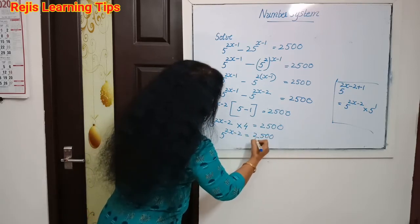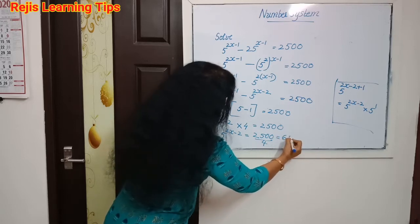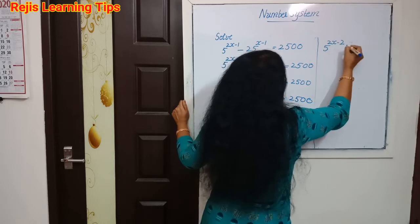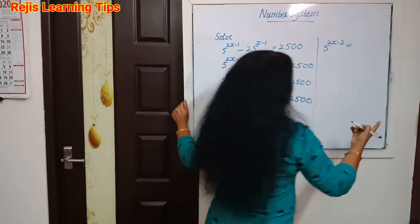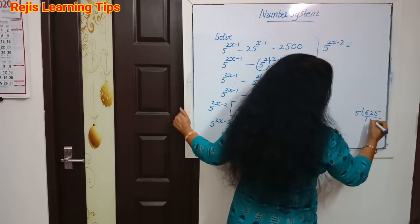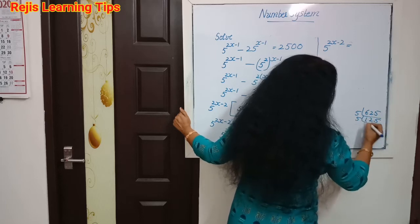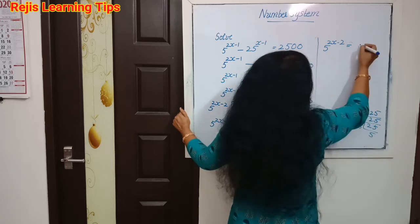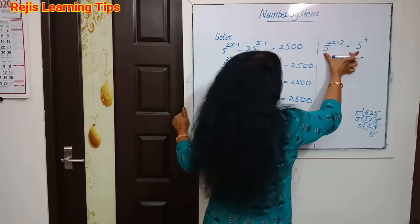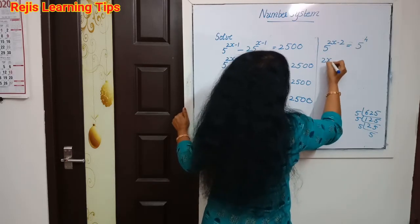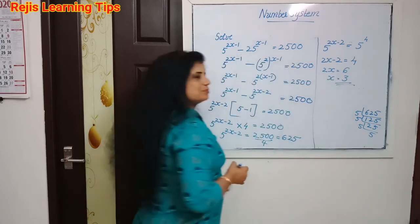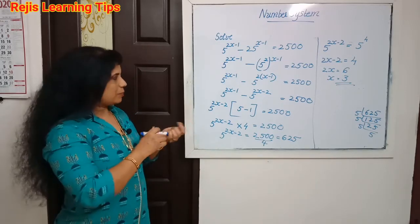Then 5 raise to 2x minus 2 is equal to 2500 divided by 4, that is equal to 625. We can write 625 as 5 raise to 4. So 5 raise to 2x minus 2 is equal to 5 raise to 4. Now this is the answer.